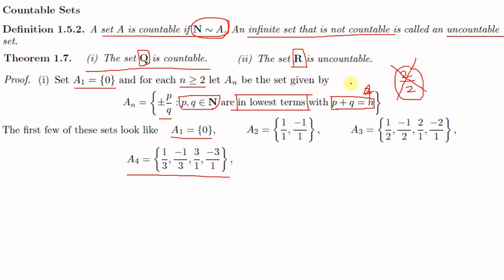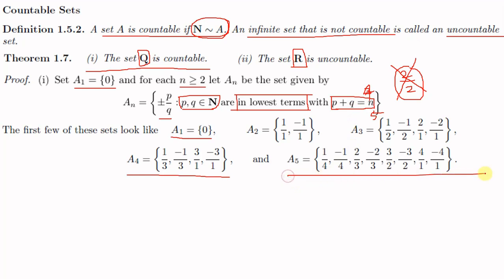For A₅, p + q = 5. The pairs are: 1+4 → 1/4 and −1/4; 2+3 → 2/3 and −2/3; 3+2 → 3/2 and −3/2; 4+1 → 4/1 and −4/1. So A₅ = {1/4, −1/4, 2/3, −2/3, 3/2, −3/2, 4/1, −4/1}.